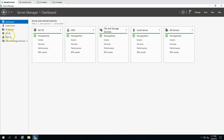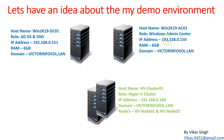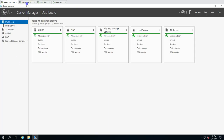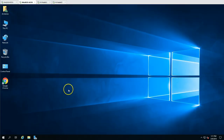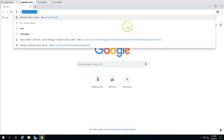The second machine I have is my Windows Admin Center server, with IP address 192.168.0.150, 6GB memory assigned, and this machine is also joined to my domain vectorinfosol.lan. If I go to Local Server and open the browser, I can navigate to Windows Admin Center.